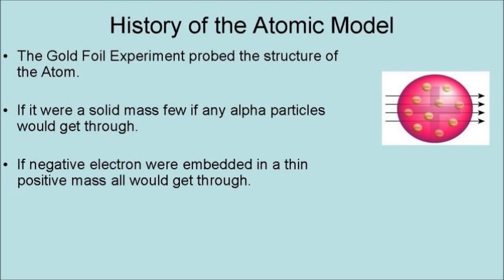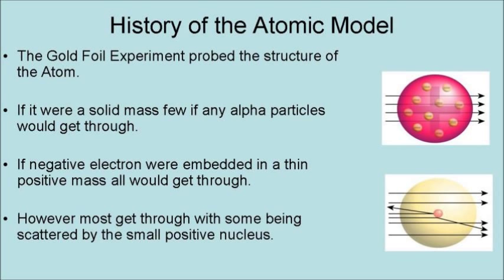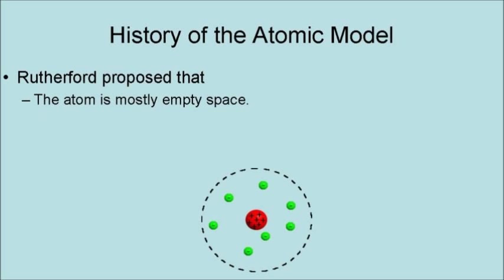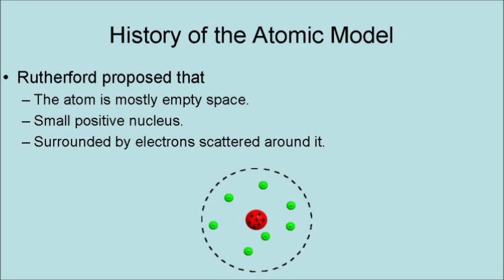However, what they found was that most of the alpha particles get through, with some of them being scattered by the small, positive nucleus. Rutherford proposed that the atom is mostly empty space, consisting of a small, positive nucleus surrounded by electrons scattered throughout the surrounding space.